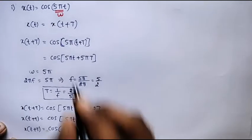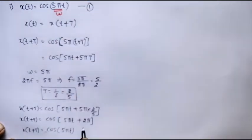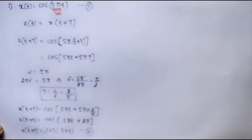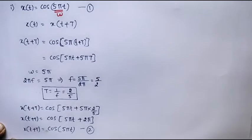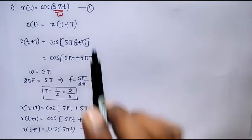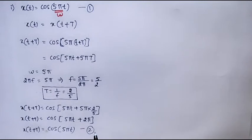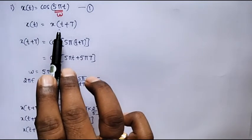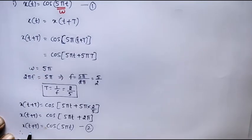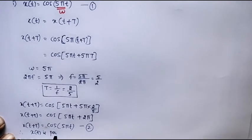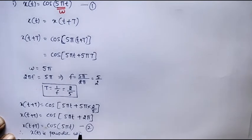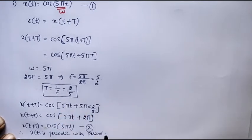Here we can observe — let this be equation 1 and let this be equation 2. From equations 1 and 2, it is verified that x(t + T) = x(t). Therefore, x(t) is periodic with period T = 2 seconds.